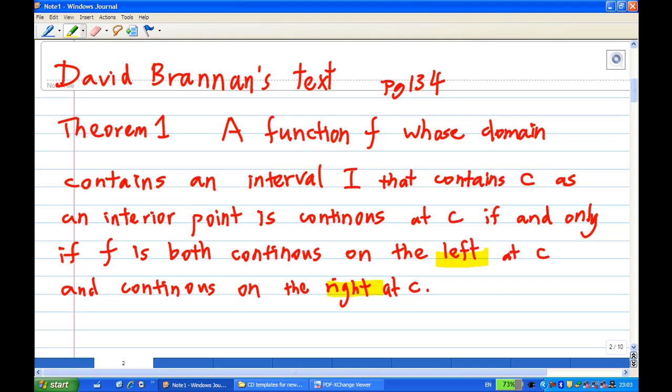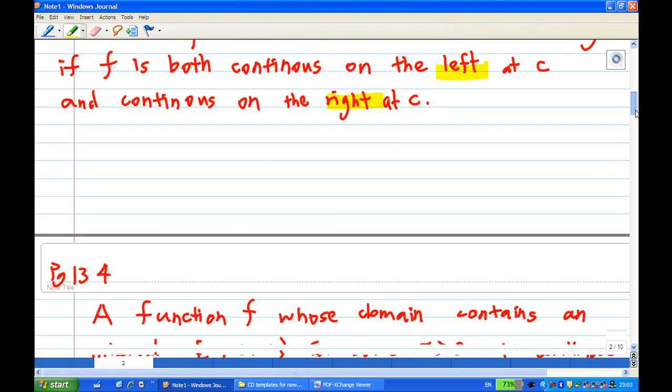Now, in order to show that the function is continuous at the point c, you must show that it is continuous on the left of c and on the right of c. And what does it mean?